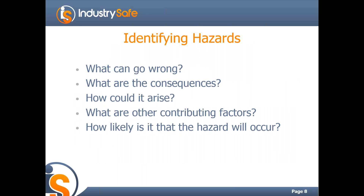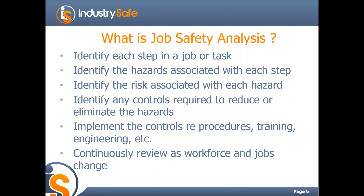Once you've figured out what jobs or tasks you need for the JSA and you've identified the steps for each of those jobs or tasks, you need to identify the hazards. Here are some good questions to ask yourself as you're going through and identifying hazards: what can go wrong, what are the consequences, how could it arise, how likely is the hazard, and what are any other contributing factors.